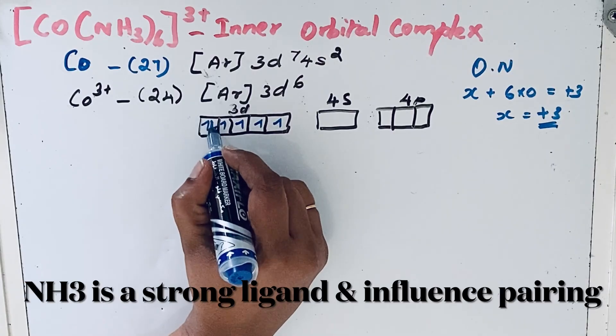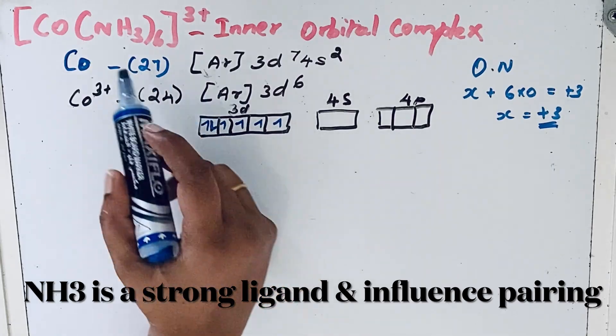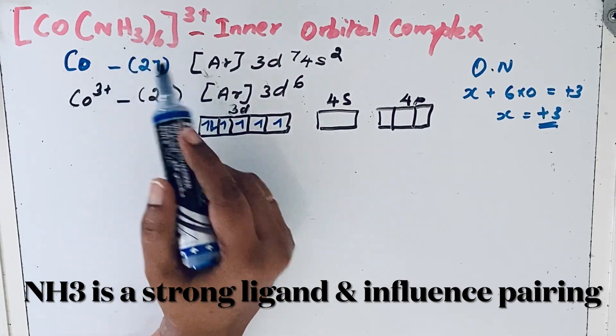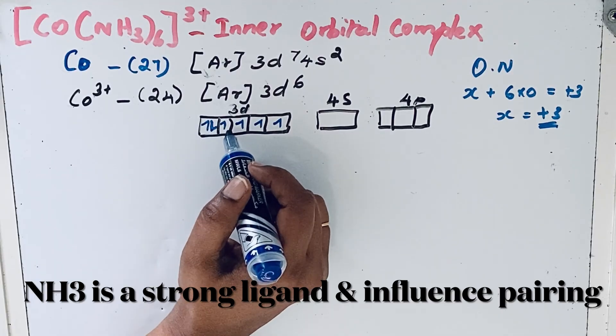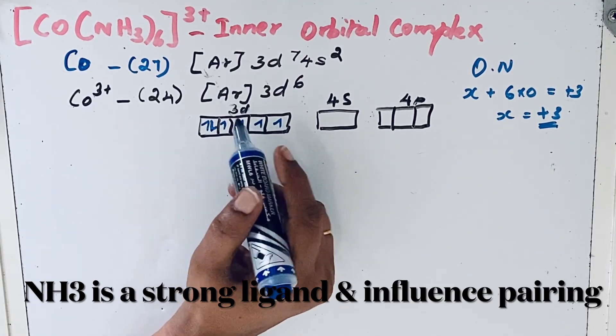There are six electrons in the 3d orbitals. Under the influence of this ligand NH3, electron pairing takes place for these electrons.